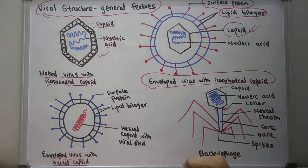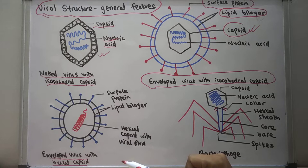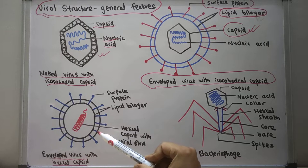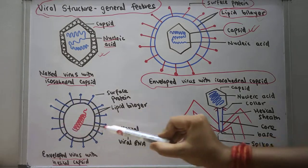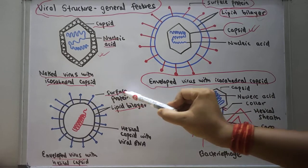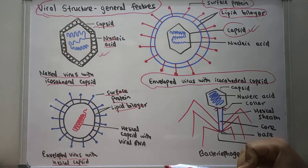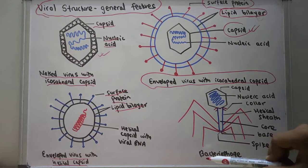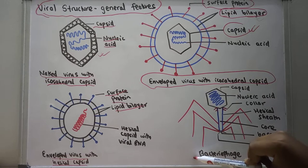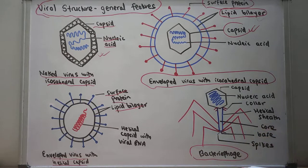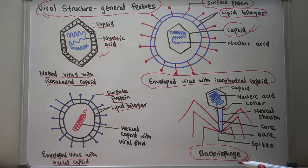You can also see the enveloped virus with helical capsid. The structure of the capsid is helical type, so it is known as the helical capsid. It is enveloped because it is surrounded by the lipid bilayer, and you can also see the surface proteins on it.